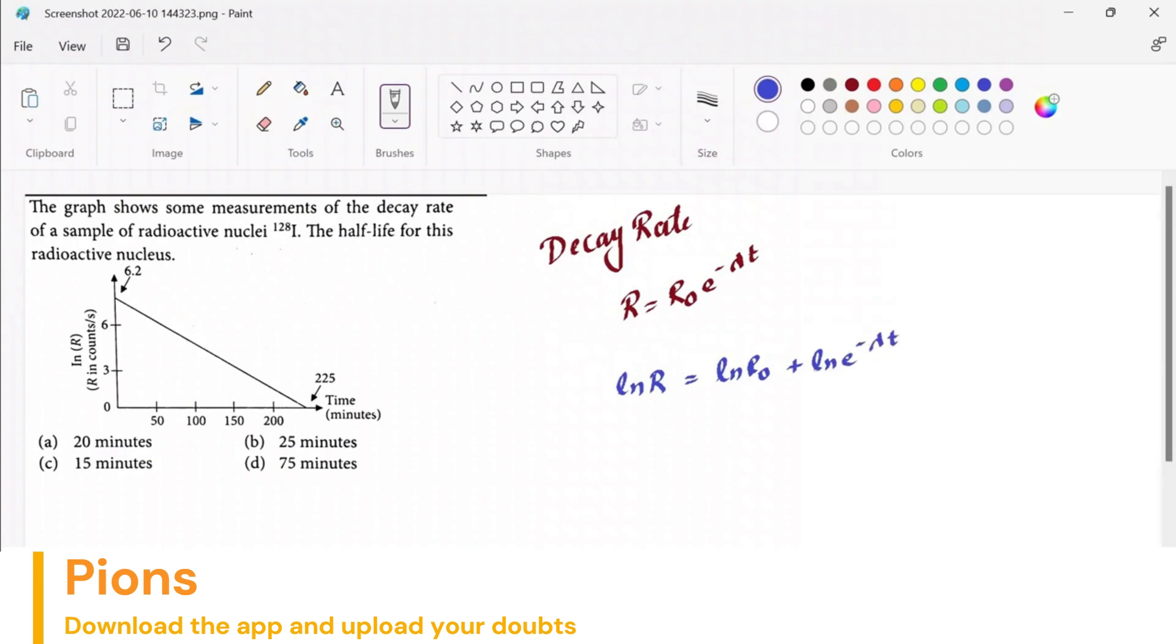Log and exponential will cancel out, and you're left with -λt. If I rearrange these terms, ln R equals -λt plus ln R₀. If I compare this equation with our standard equation of a line, y = mx + c.